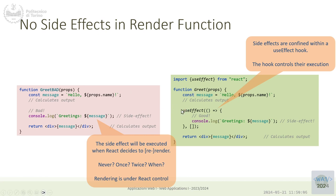useEffect may serve this purpose: something that will affect some external world and we can control when it's executed. For logging something in debug mode, it's perfectly okay as long as we remove it at the end. But imagine something that has a real effect — you should be able to control it. So how does useEffect work?